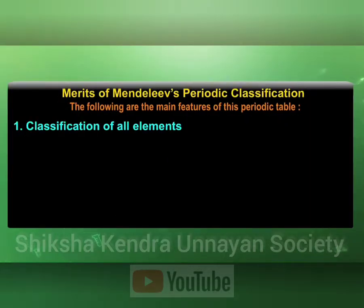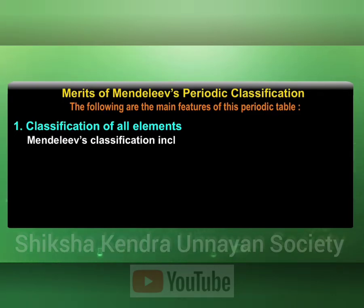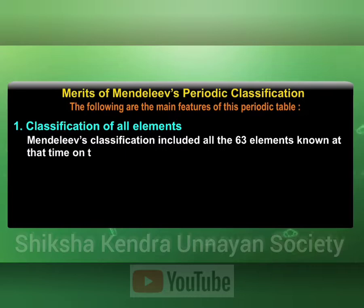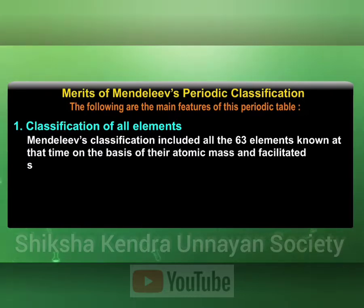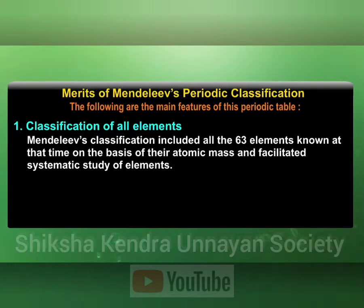Mendeleev's classification included all the 63 elements known at that time on the basis of their atomic masses and facilitated systematic study of elements.